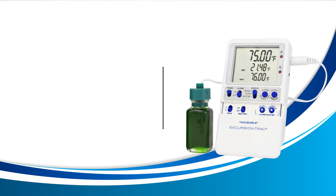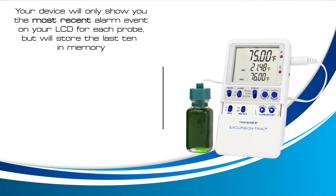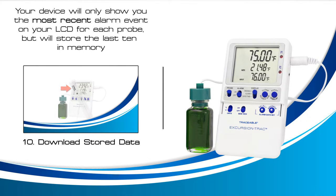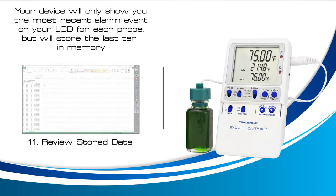Before we get started, it's important to know that your device will only show you the most recent alarm event for each of your probes, but it stores the last 10 alarm events in memory. To view the last 10 alarm events, refer to the downloading stored data video to learn how to extract your data onto a USB drive. Once you've completed that lesson, watch the reviewing stored data video to learn how to review your data, including how to view the last 10 alarm events.